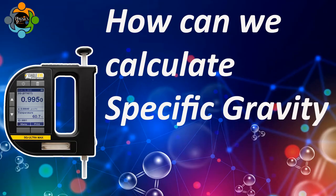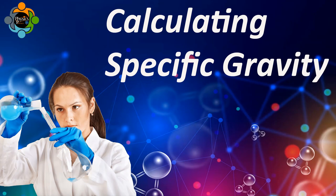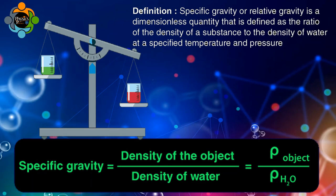So how do we calculate specific gravity? Calculating specific gravity is a straightforward process. The formula for specific gravity is SG equals density of a substance divided by the density of the reference substance. This means that if we know the density of a substance and we also know the density of water, the reference substance, we can calculate the specific gravity of that substance.